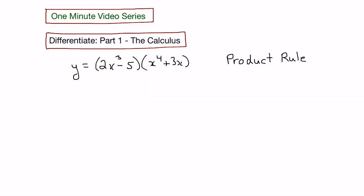Let's look at an example of finding the derivative using the product rule. Here we have an equation that's made up of the product of two smaller functions.